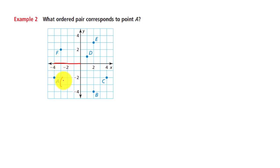Hence its X coordinate is negative 4 and we have to move 2 units downward. Hence its Y coordinate is negative 2. Ordered pair negative 4 comma negative 2 corresponds to point A.